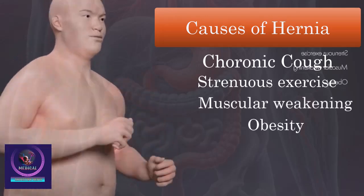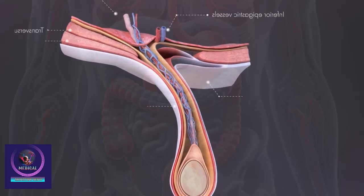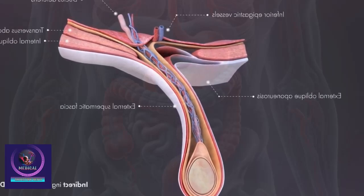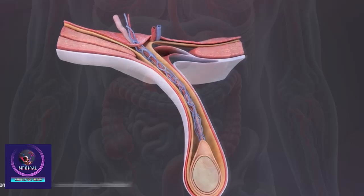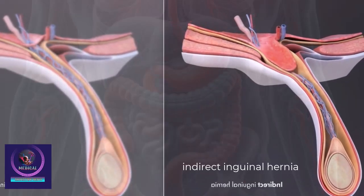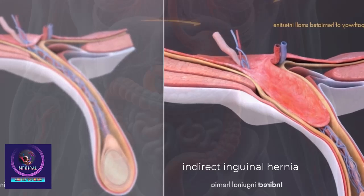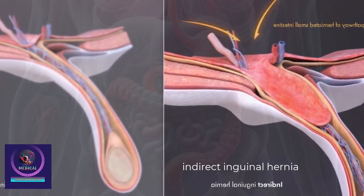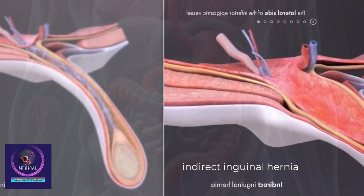Inguinal hernia is further subdivided into indirect inguinal hernia and direct inguinal hernia. The indirect inguinal hernia travels along the same path as the spermatic cord and enters the inguinal canal starting from the deep inguinal ring, occurring on the lateral side of the inferior epigastric vessel and entering the scrotum.